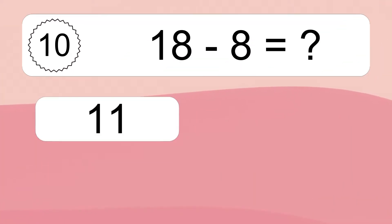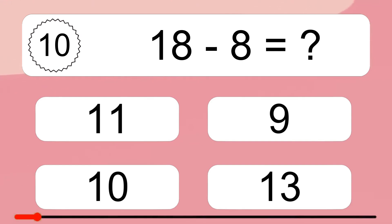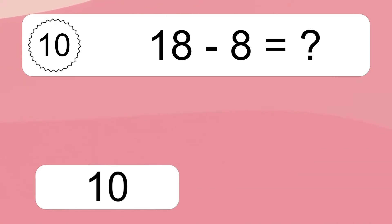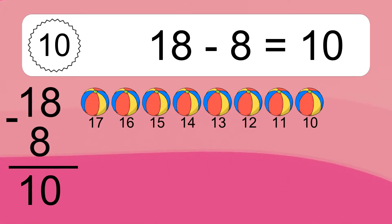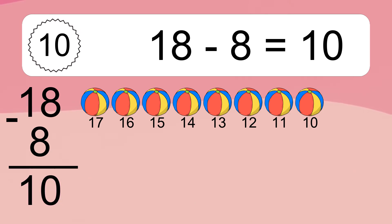18 minus 8 equals what? 18 minus 8 equals 10. Let's count it. 17, 16, 15, 14, 13, 12, 11, 10.